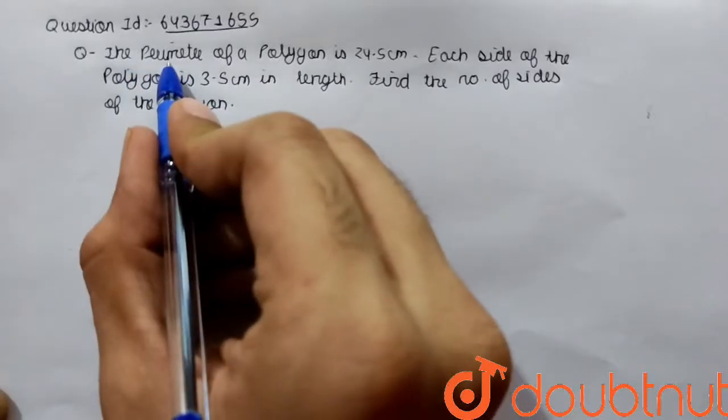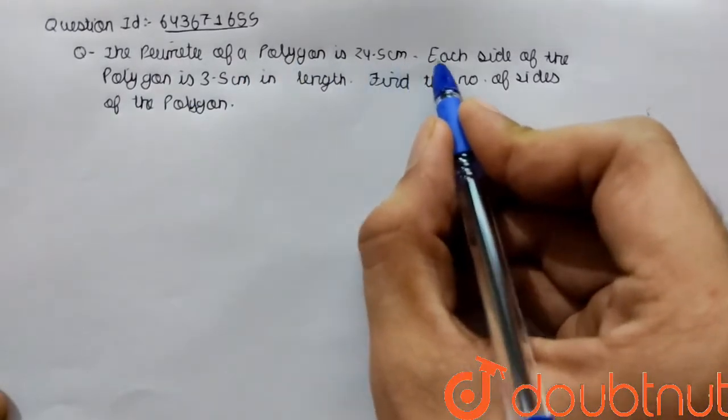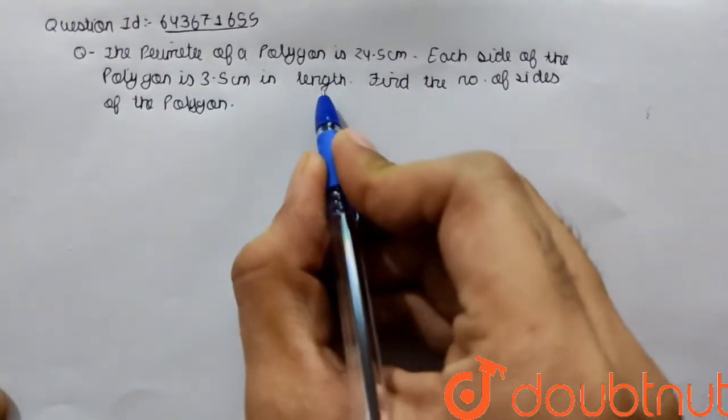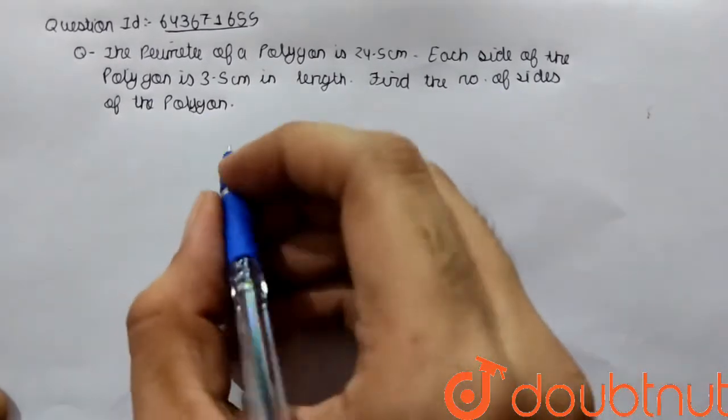The given question is: the perimeter of a polygon is 24.5 centimeters, each side of the polygon is 3.5 centimeters in length. Find the number of sides of the polygon.